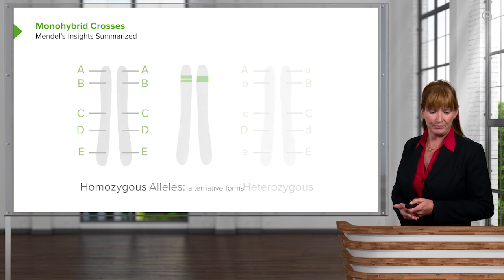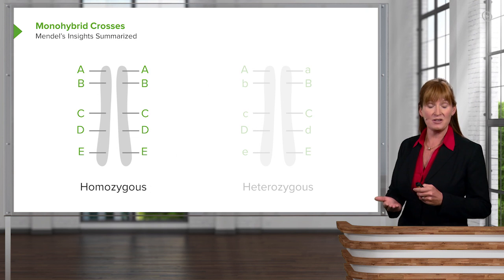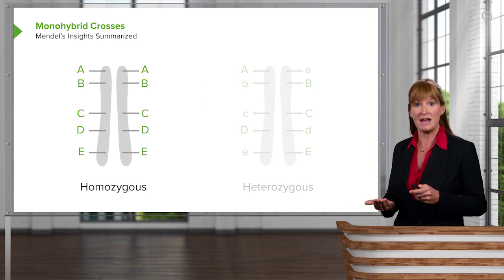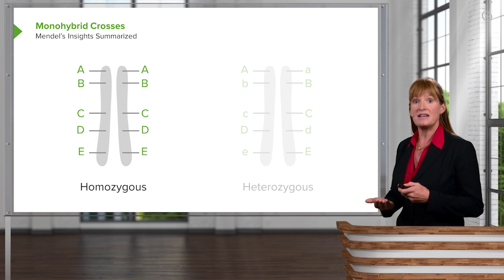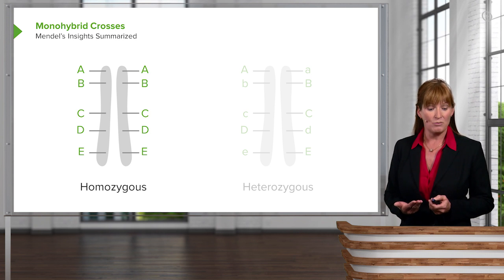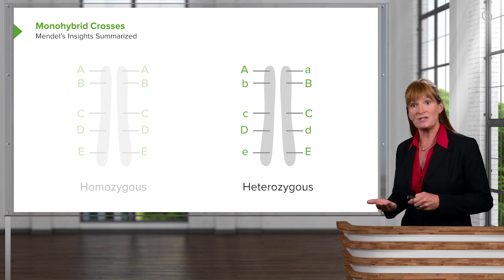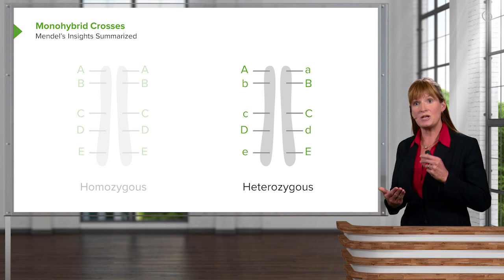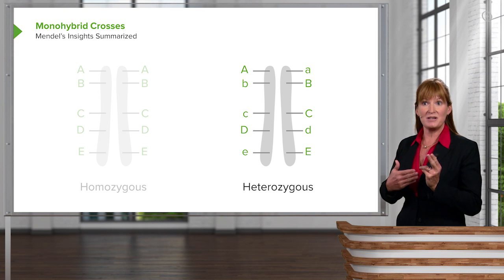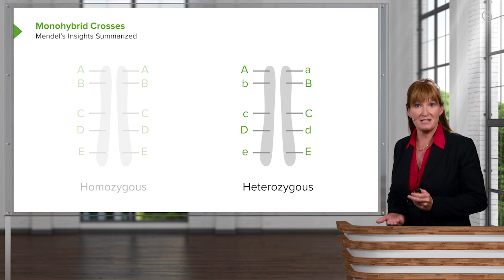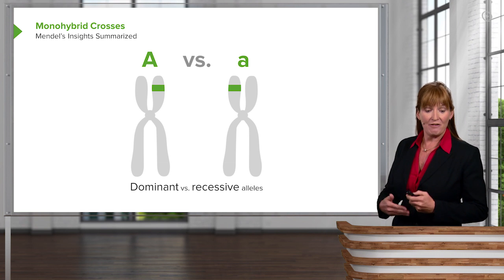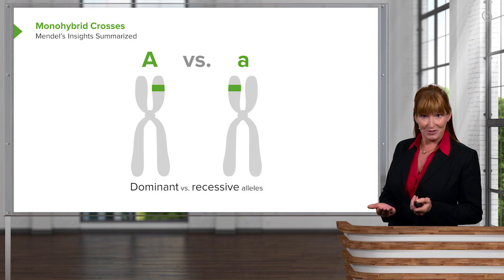We'll look at those later. He also came up with the idea of homozygous versus heterozygous. That is, an individual could carry two of the same alleles — homozygous — or heterozygous, where they carry varying alleles, so one dominant and one recessive allele, for example.